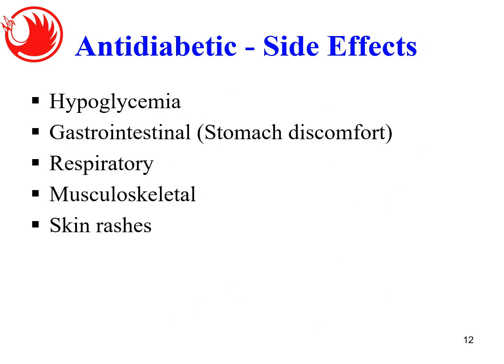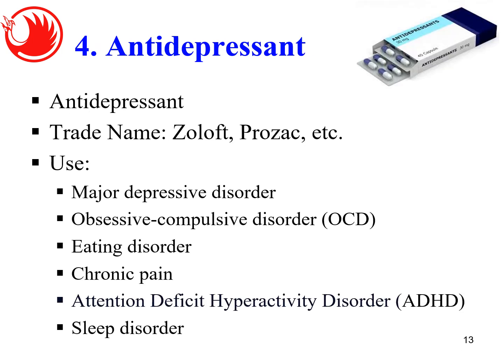The side effects of anti-diabetics include: number one, hypoglycemia — meaning blood glucose is too low — which is possible if you overdose, making glucose in the bloodstream very minimal. Also, intestinal or stomach discomfort: if you prevent the intestine from absorbing glucose into the bloodstream, you will feel discomfort. Other side effects include respiratory issues, musculoskeletal issues, and even skin rashes.